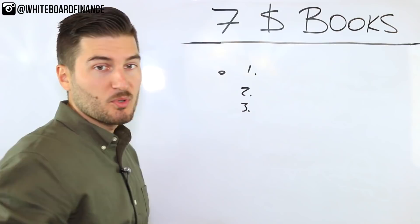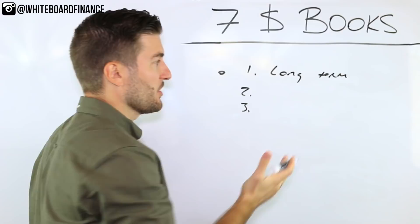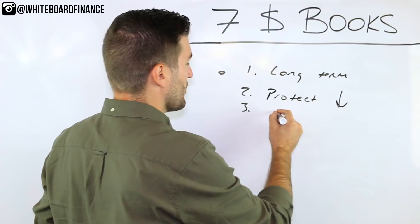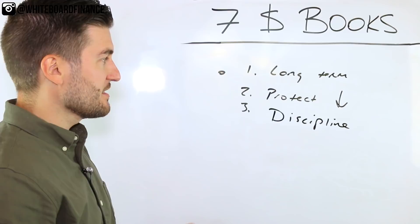So my three takeaways from this book is pretty much there's three principles to investing. Let me write these down real quick. The first one is analyzing for long term. Okay, this isn't for people that are going to be swing trading or getting in and out of trades. The second is protecting yourself from losses. And then the third is sticking to a strict formula. So I'll just say having the discipline to know what your criteria is and sticking with that.